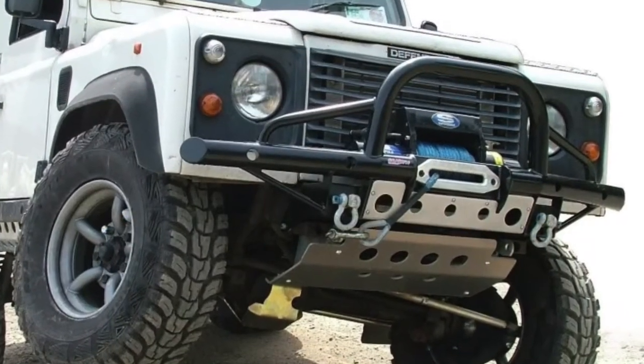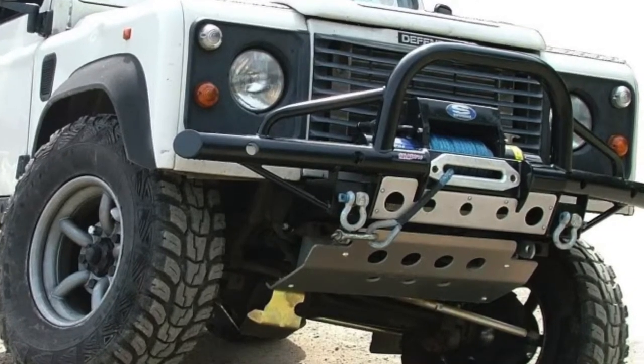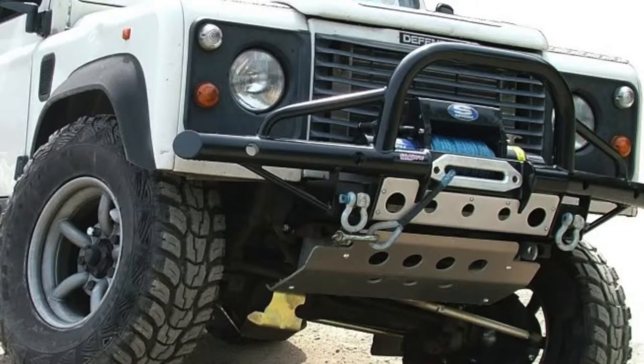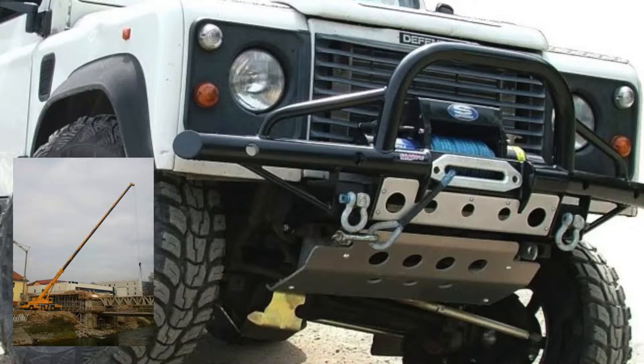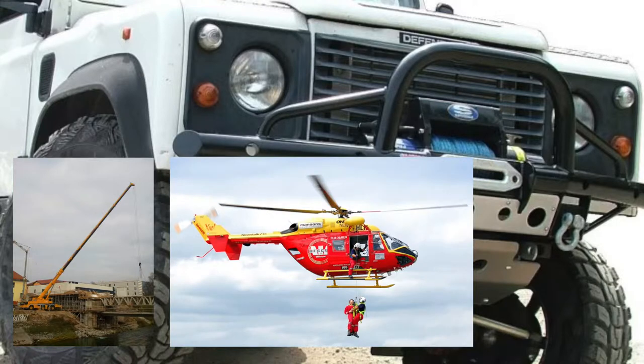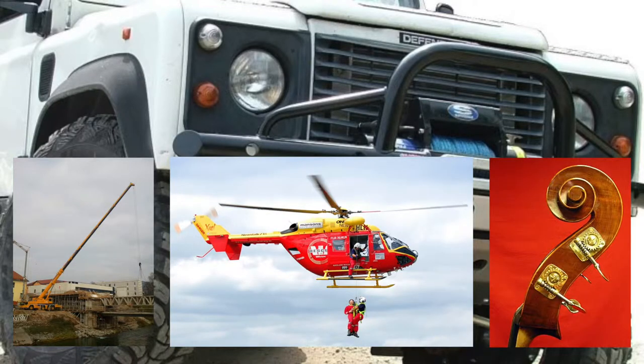Our example is based on a winch at the front of a 4x4, but similar mechanisms are used on big things like cranes and rescue helicopters, and also smaller things like on a cello for tuning the strings.